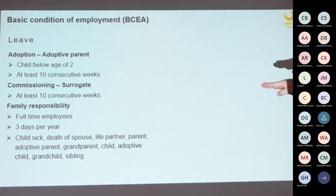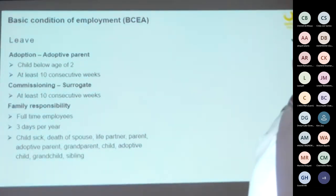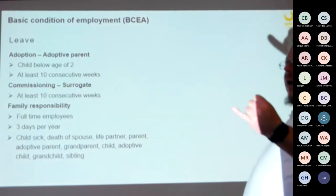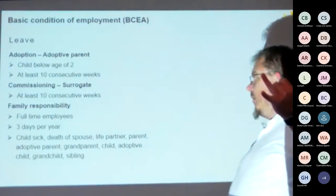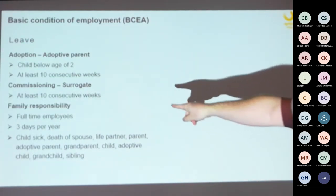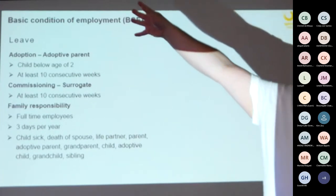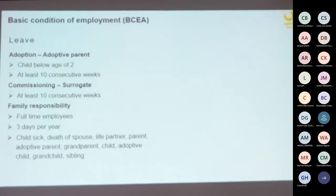Family responsibility leave is only available to full-time employees. You get three days' family responsibility leave per year. It applies to specific situations — when a child is sick, or when there is a death in the family. Death means a close relative: spouse, life partner, parent, adoptive parent, grandparent, child, adoptive child, grandchild, or sibling. Not a distant relative like a niece twice removed.